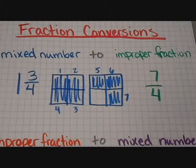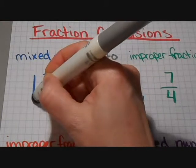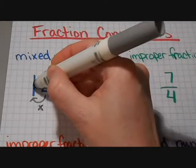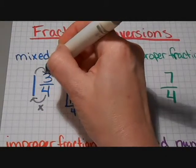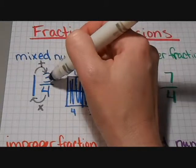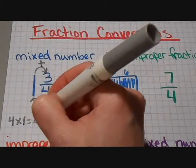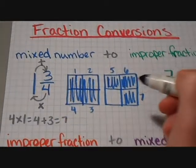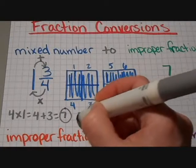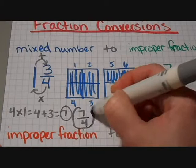Let me show you how to do that mathematically without having to draw out the pictures. What you want to do with your mixed number here is take the bottom number and multiply. Four times one is four. Then take that number that you get and add it to the top number. So four plus three is seven. Four times one equals four, and then four plus three equals seven. So that's going to be your new numerator, and you just put that over the same denominator that you had to begin with. So seven fourths is your answer.